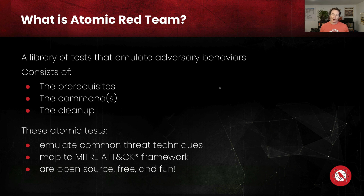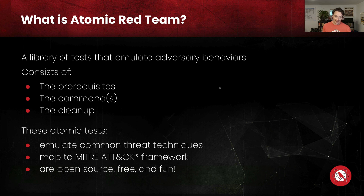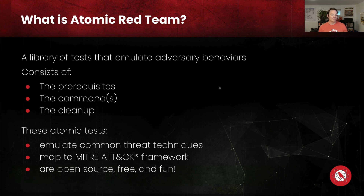These behaviors are the kinds of things that you would expect to find in a real threat. Where do these tests come from? Some of them are inspired by threats that we detected at Red Canary — we'll detect the threat, see something interesting or useful in there, and write a test based on that. Most tests are community contributed, where someone at another organization detects a threat, finds it interesting, and submits it up to the repository. Probably most tests are being submitted by folks who are reading a vendor's intelligence report, finding an interesting TTP in there, and deciding to write a test for it.